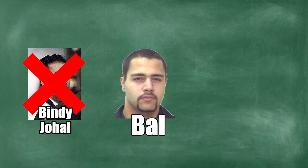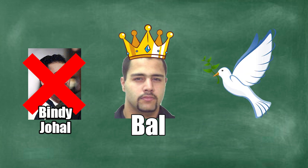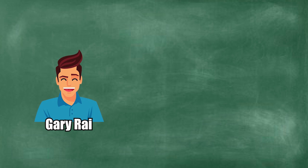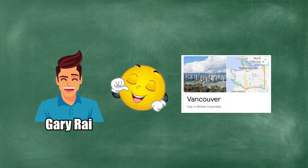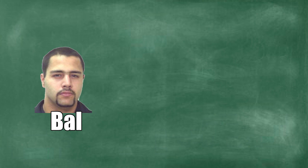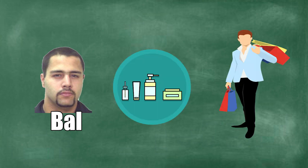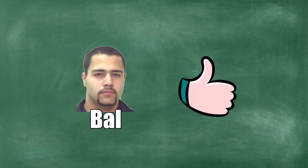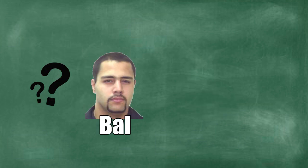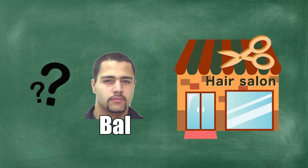With Johal gone, Bal took over the empire, and peace lasted until August 3, 2001. Gary Rai, Bal's close friend, suggested they go to a Vancouver salon and get their legs waxed. Bal loved to take care of himself and was known for his strong fashion sense. He agreed. Unknown to Bal, it was in that salon that his life would change forever.